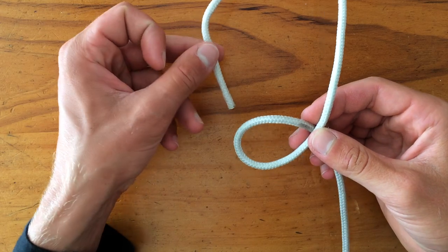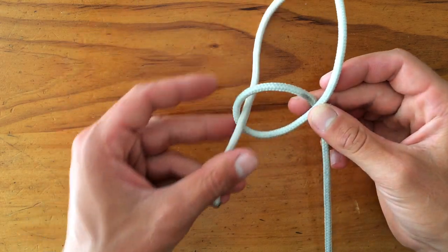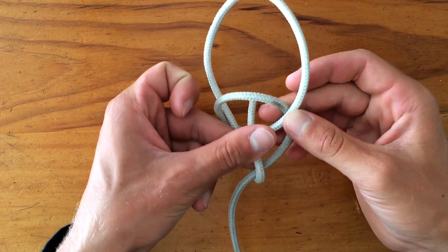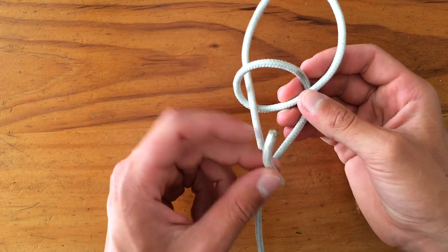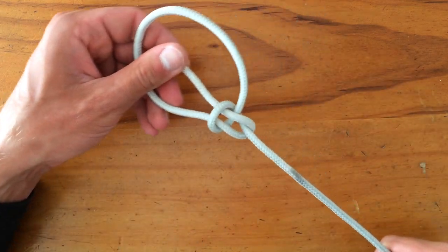Your tag end comes in through the bottom, then around your main line, and then back through the middle, back through from the top through the middle. Then it will cinch down nicely like that.